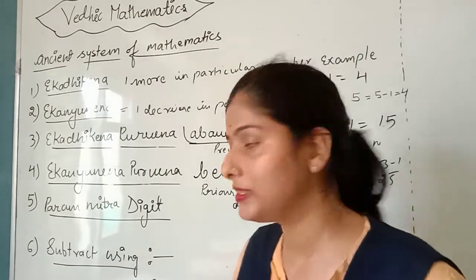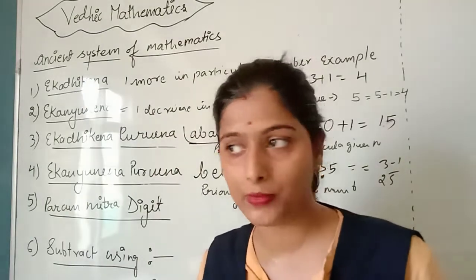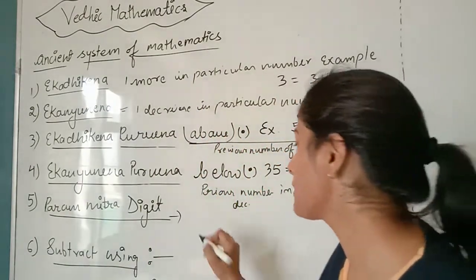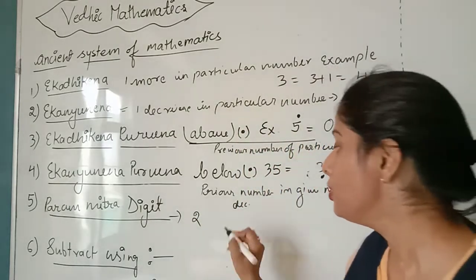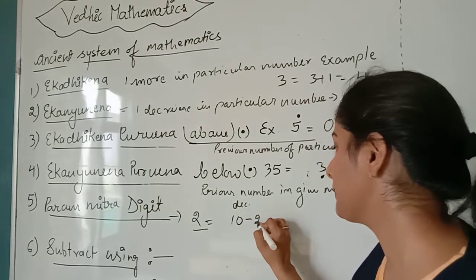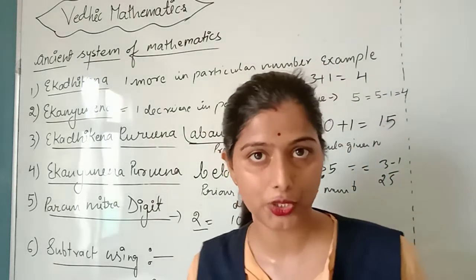Now, Paramitra. What is Paramitra? Paramitra means complementary digit or friend number. How do we find it? Suppose we find the Paramitra of 2. We subtract the given number from 10. So the complementary digit is 8.